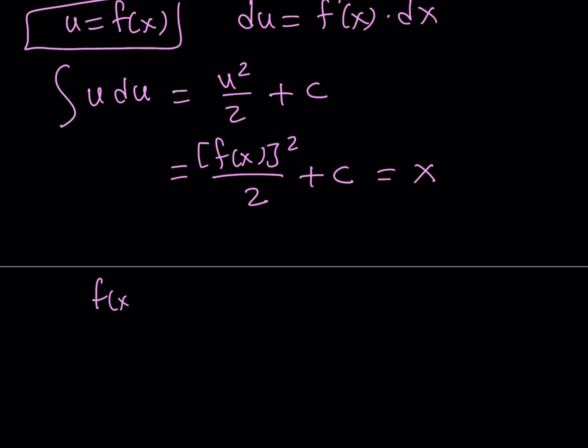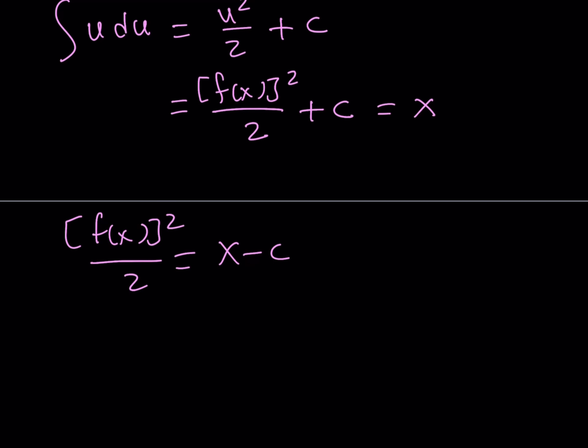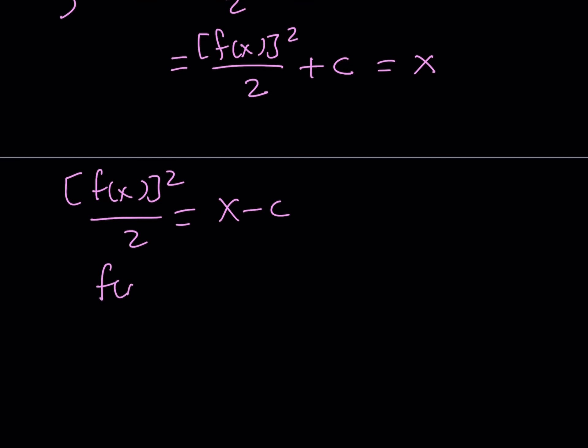Let's subtract c from both sides. That gives us x minus c. Multiply both sides by 2. We get 2x minus 2c. By the way, c is a constant here.